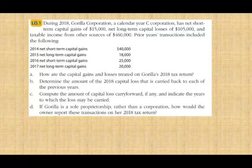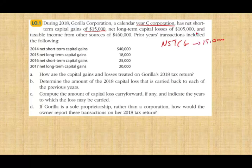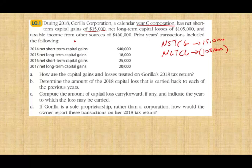Let's work through the Gorilla Corporation example. During 2018, Gorilla Corporation, a calendar year C corporation, has a net short-term capital gain of $15,000, a net long-term capital loss of $105,000, and taxable income from other sources of $460,000. Prior year data shows net long-term capital gains in 2014, 2015, 2016, and 2017. The question asks: how are the capital gains and losses treated on Gorilla's 2018 tax return?